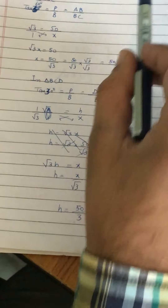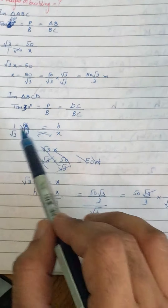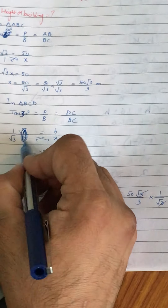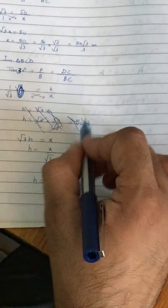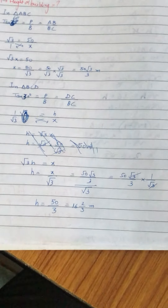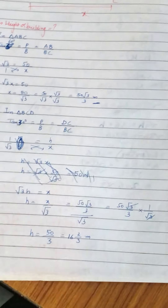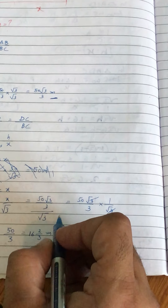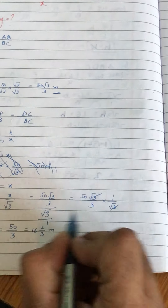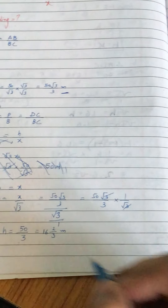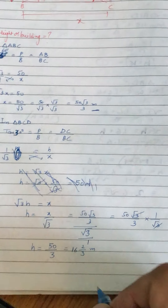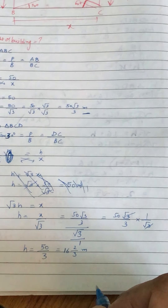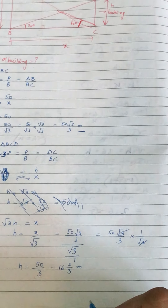The second triangle is BCD. In BCD, tan30° equal to P upon B — perpendicular is DC and base is BC. 1 by root 3 equal to h upon x. Cross multiply: root 3 h equal to 80 minus x — wait, x is equal to root 3 h. Taking x's value which was 50 root 3 by 3, and substituting: h is equal to 50 root 3 by 3 divided by root 3. Simplifying, h = 50 by 3. Converting to mixed fraction: answer is 16⅔ meter. That was question number 9 — the height of the building is 16⅔ meter.